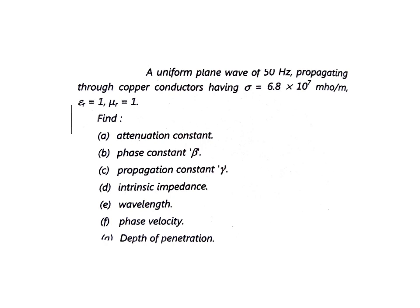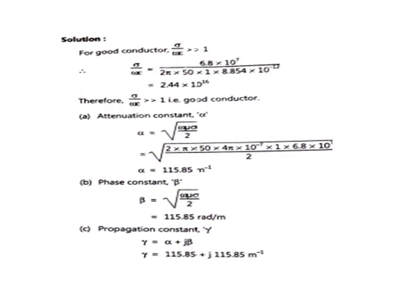We are supposed to calculate the attenuation constant, phase constant beta, propagation constant gamma, intrinsic impedance, wavelength, phase velocity, and depth of penetration. Now let's move towards the solution. For good conductors, the condition is that sigma divided by omega epsilon is always greater than 1.